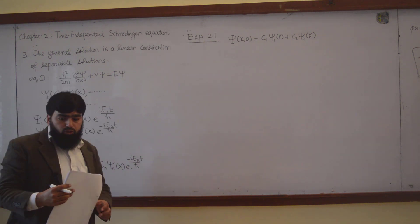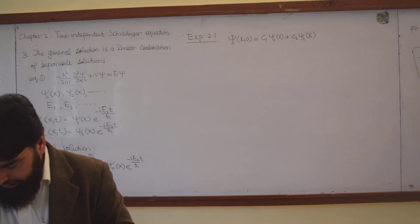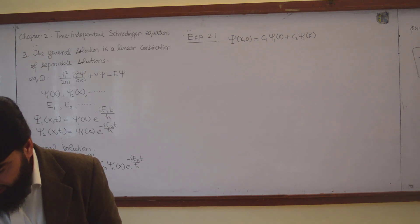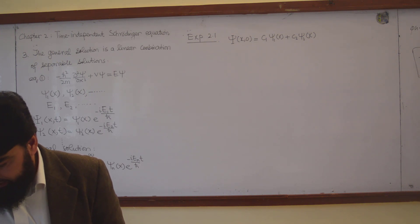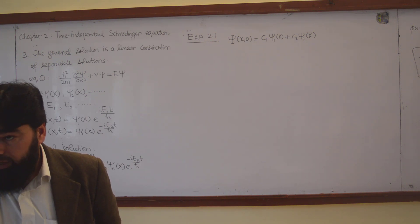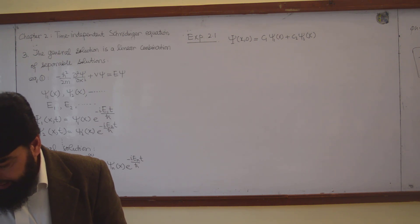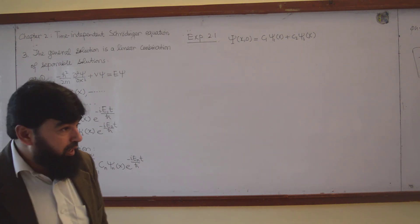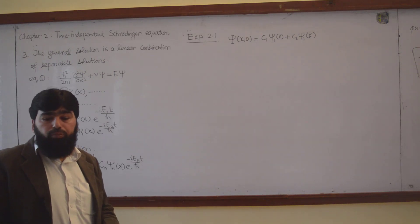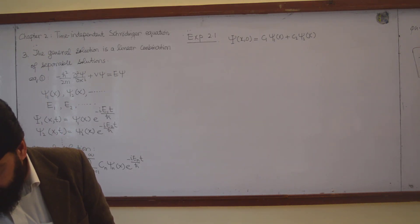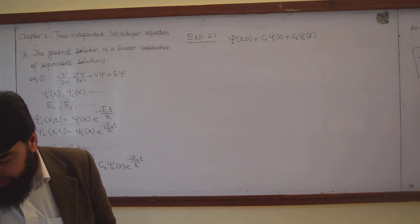The example further says to keep things simple, we assume the constants Cn and the states ψn are real — they contain no imaginary parts. The question asks: what is the wave function Ψ(x,t) at subsequent times, what is the probability density, and how does the particle move?